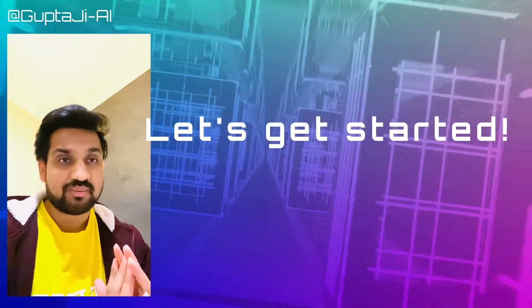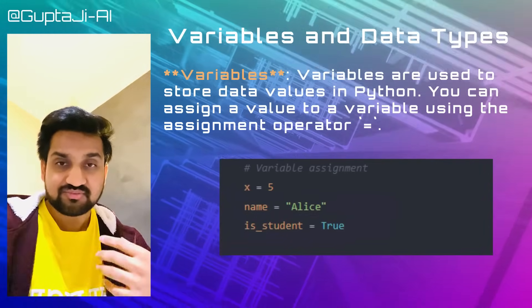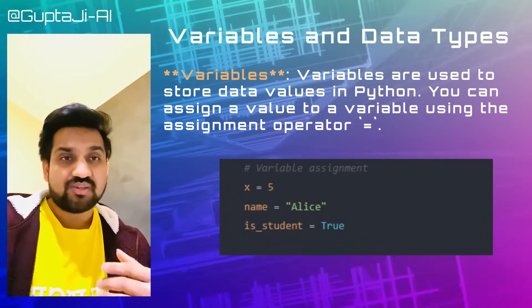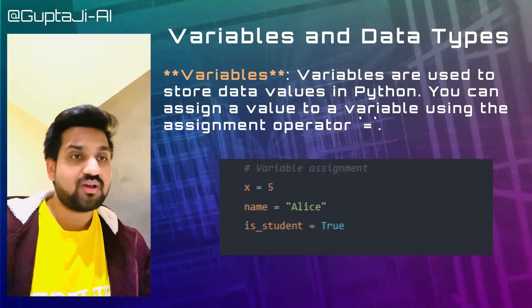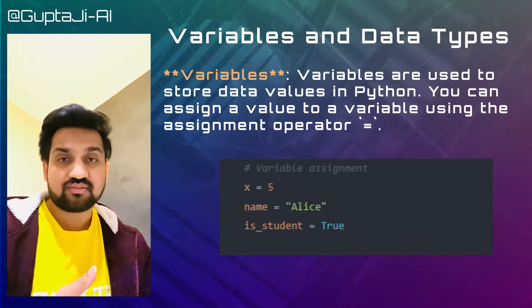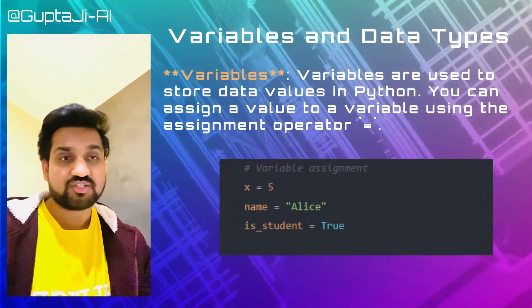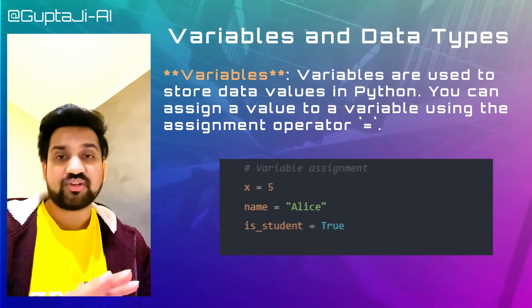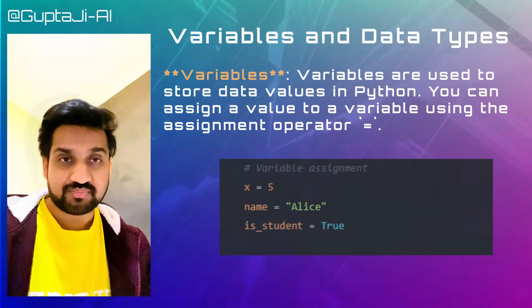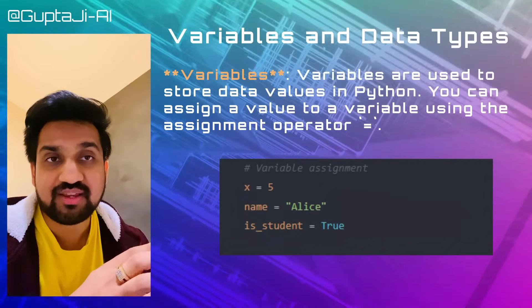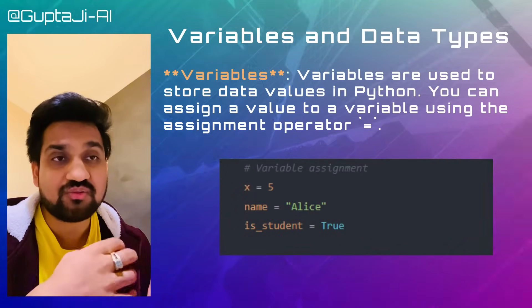Let's start with variables and data types. In Python, variables serve as containers for storing data values. You can assign values to variables using the assignment operator, equals. Python supports a wide range of data types — integers, floats, strings, booleans, lists, tuples, and dictionaries. For example, x = 5 is an integer variable, and name = 'alice' is a string variable.